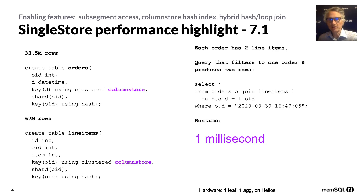An OLTP application would do this differently: there'd be an index on the join column of line items (the OID column). We'd pick the one row from orders with that particular date, seek into the index on the join column of line items, find the two rows, and return them — without looking at the entire line items table. That's called the nested loop join strategy.